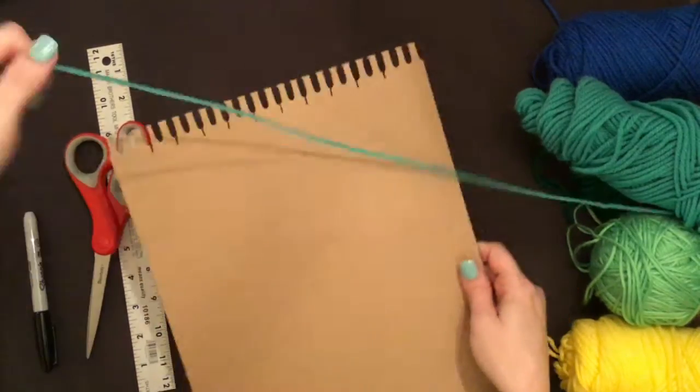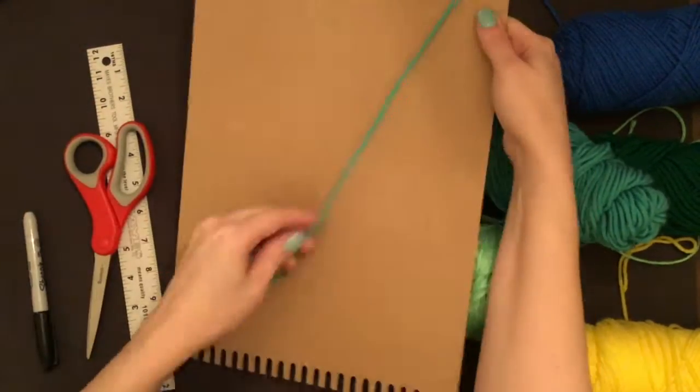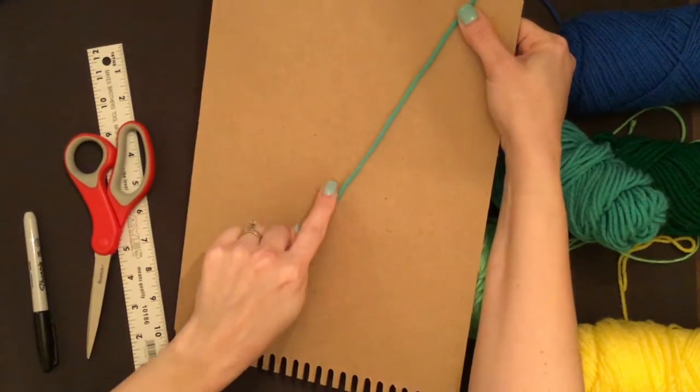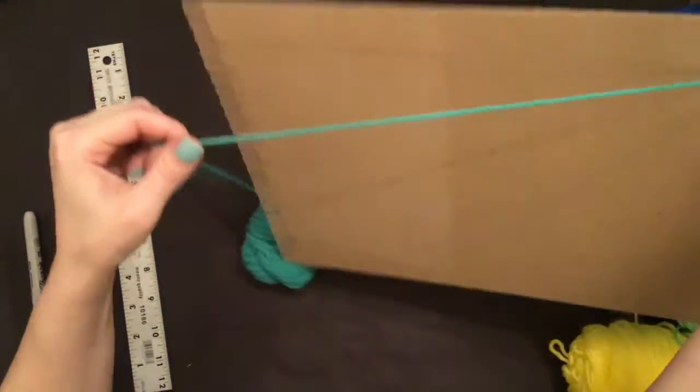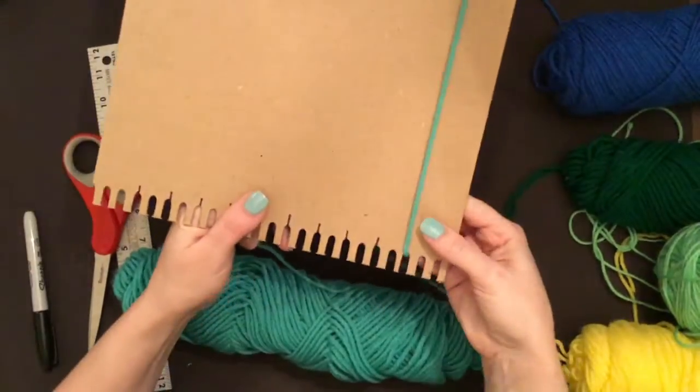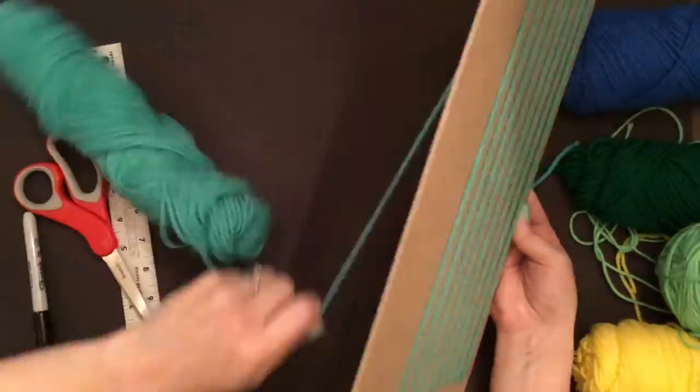Using a piece of yarn or string, place the yarn in the first notch and a little over halfway down the back of the cardboard loom. Then go around the back and up and over, wrapping the yarn on each of the lines until you have 10 lines on the front.